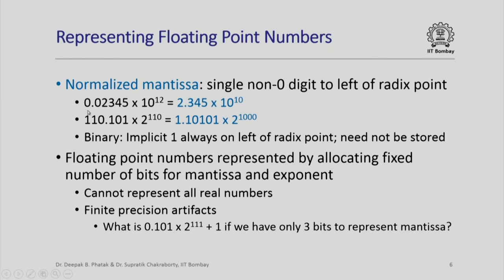When we write the mantissa, the same number can be represented in two different forms. For example, in decimal, 0.02345 times 10 raised to 12 is the same as 2.345 times 10 raised to 10. So which should we take as the mantissa? We say that a mantissa is normalized if there is a single non-zero digit to the left of the radix point. So 0.02345 is not normalized because there is a 0 to its left, whereas 2.345 is normalized. The same notion carries over to binary representation — a mantissa is not normalized if there is more than one non-zero digit to the left of the radix point.